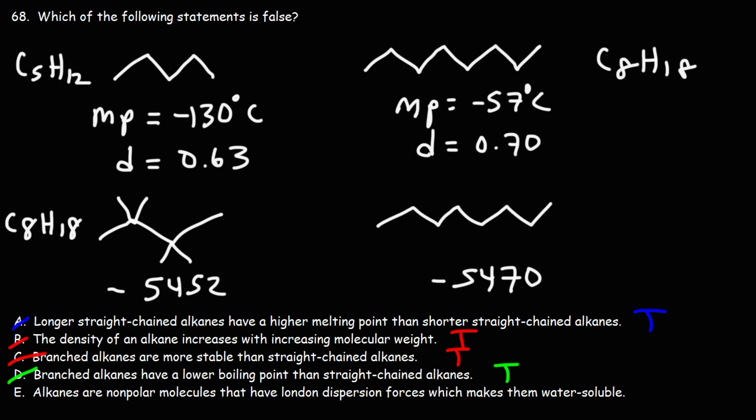The forces holding them together, preventing them from boiling off, is reduced. That's why branched alkanes have a lower boiling point than straight-chain alkanes.